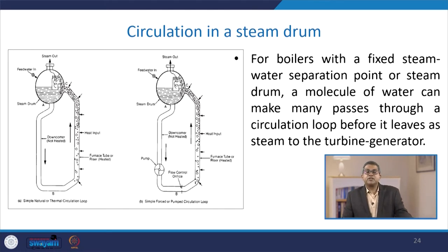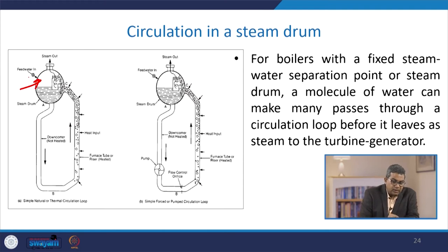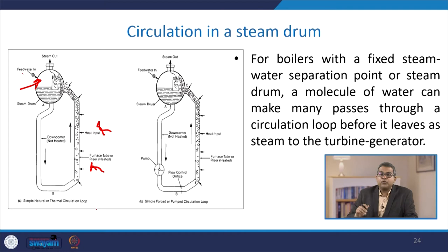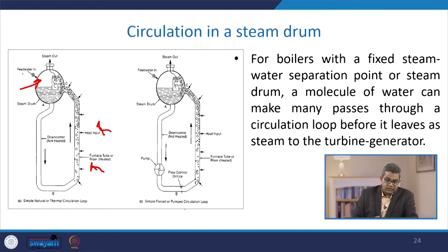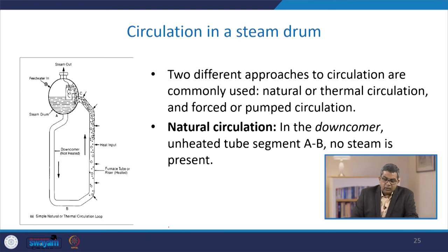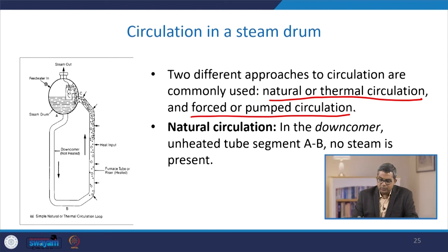Now let us talk about circulation in the steam drum. In this system, steam comes out at the top, flow water enters, and heat input is provided below via risers — this is simple natural circulation. For boilers with a fixed steam-water separation point or steam drum, a molecule of water can make many passes through a circulation loop before it leaves as steam to the turbine generator. Two approaches for circulation are natural or thermal circulation, and forced or pump circulation.